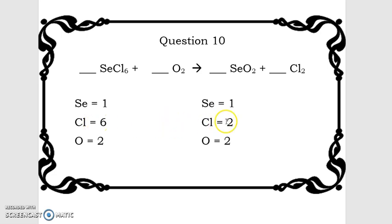Chlorine, two and six, two goes into six three times, so we're going to change this here to be a coefficient of three. Three times two is going to be six. Now we have one and one for selenium, six and six for chlorine, and two and two for oxygen. So this equation is balanced just with that one coefficient.